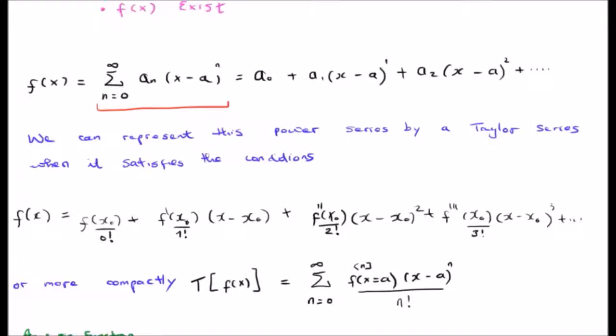So of course this is pretty straightforward: a zero plus a sub 1 x minus a to the 1 and so on. We can represent this particular power series by what's known as a Taylor series when it satisfies the conditions mentioned